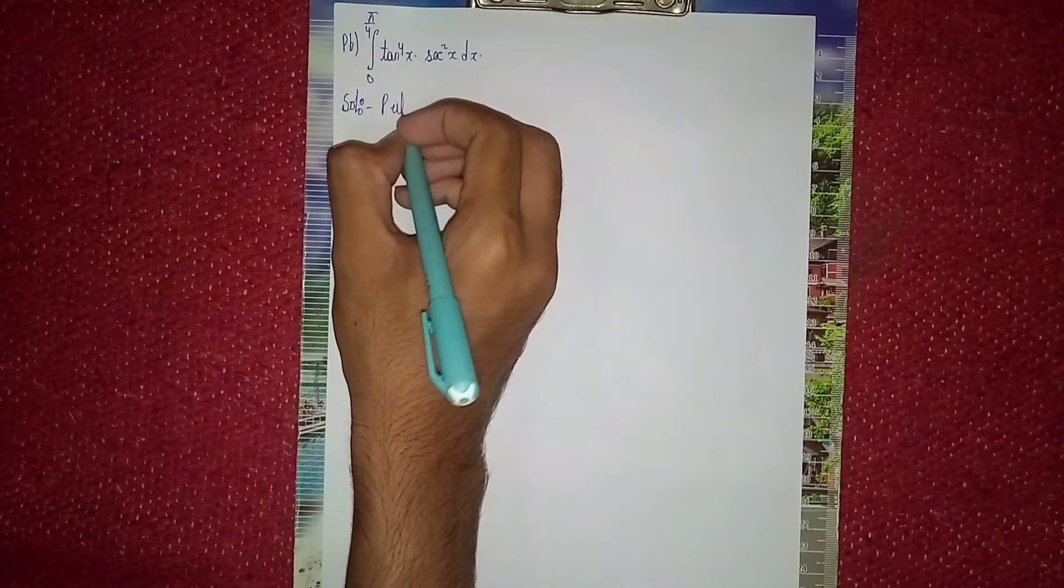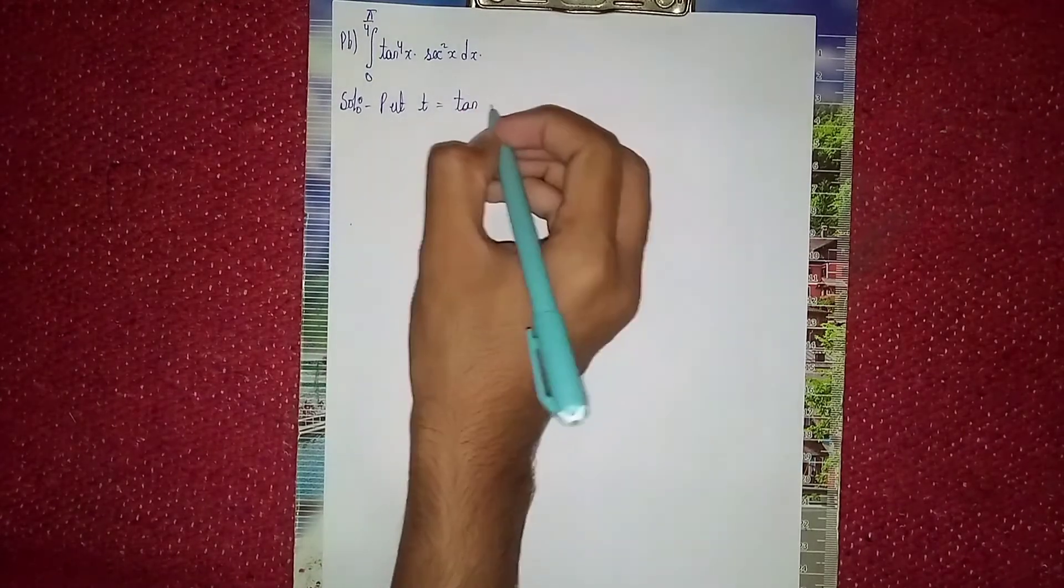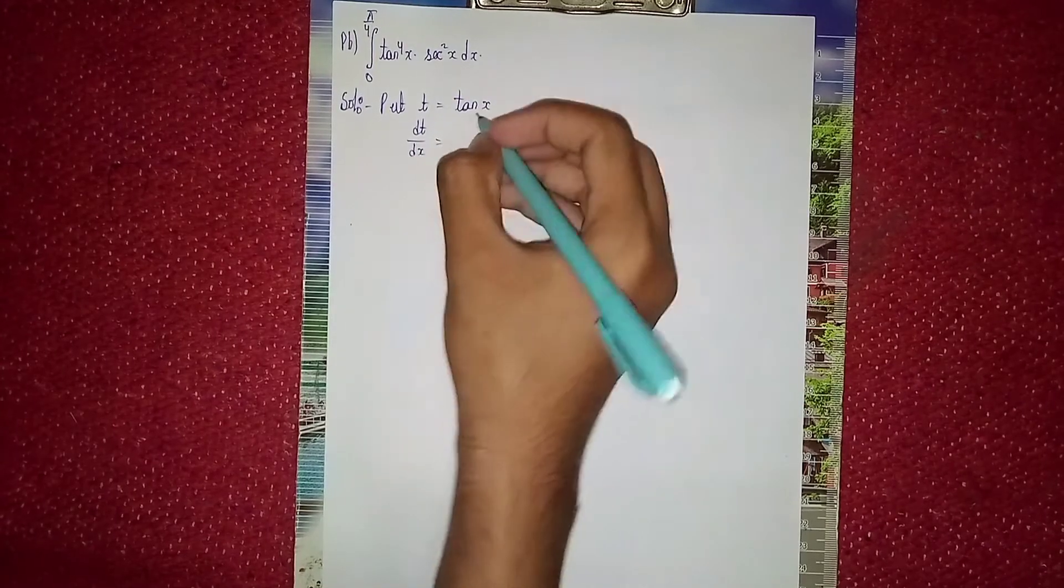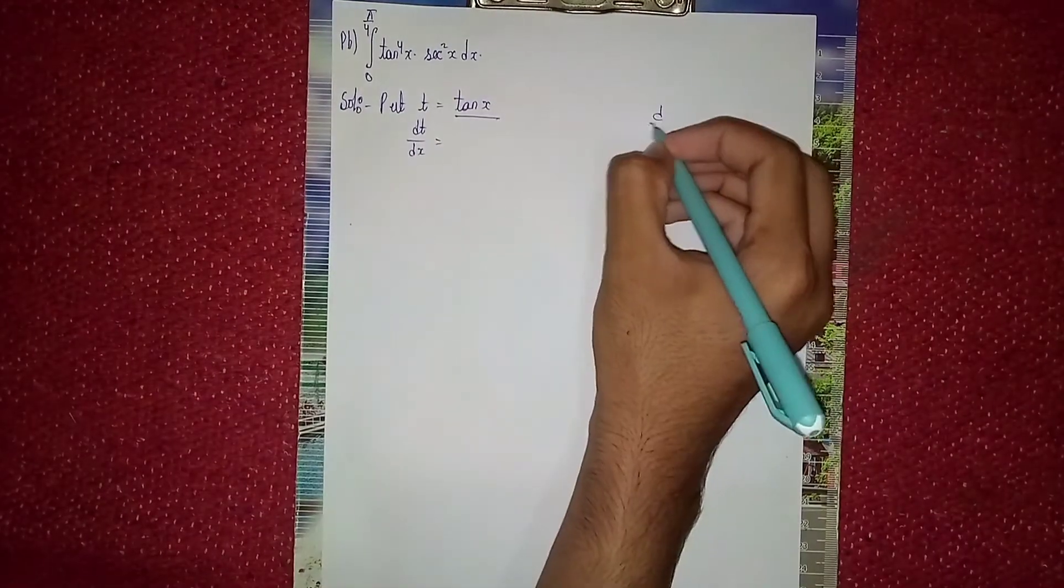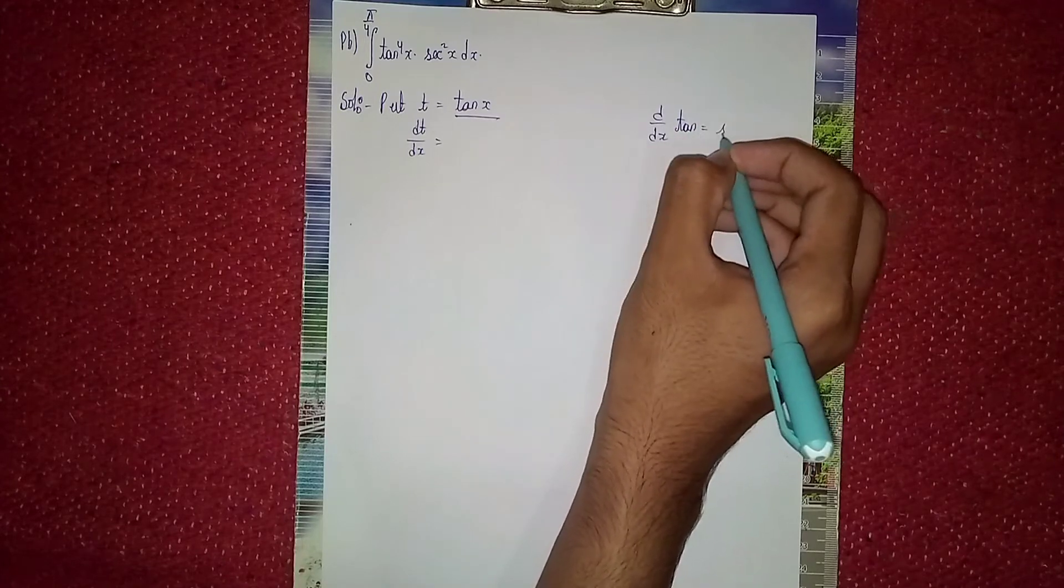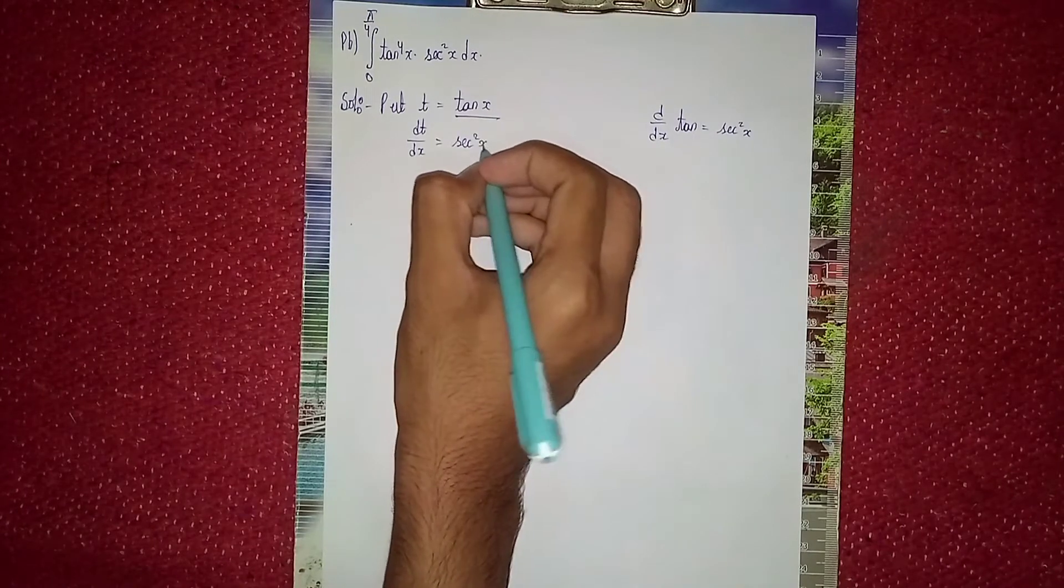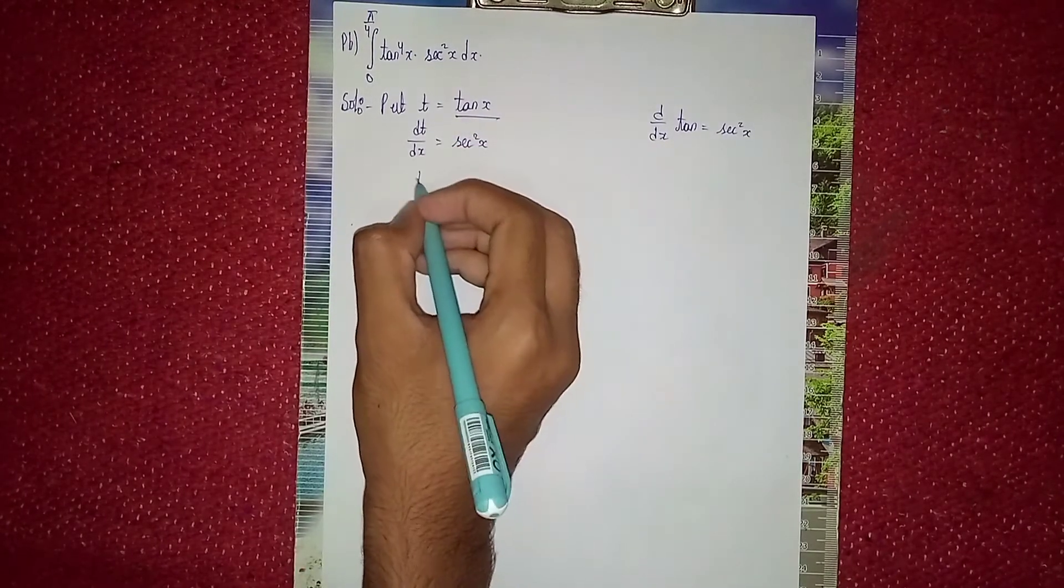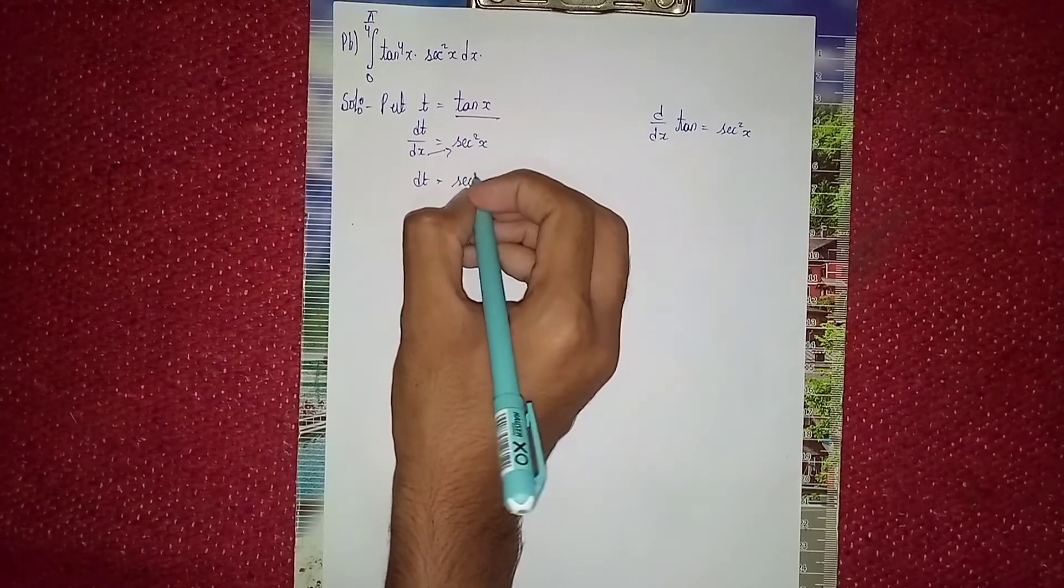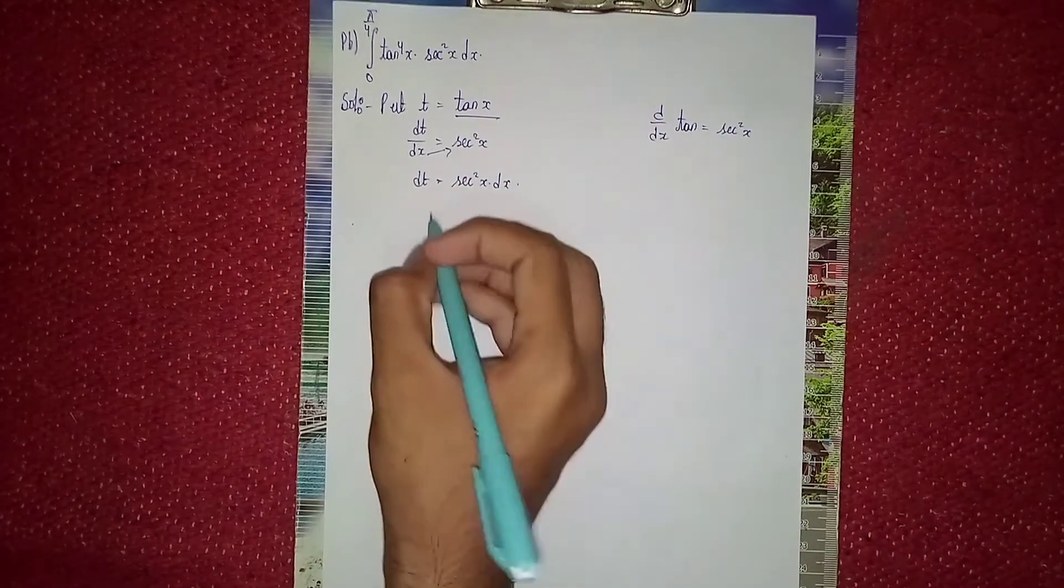Let's put t equal to tan(x). Now differentiate: dt/dx equals d/dx of tan(x), which equals sec^2(x). So it becomes sec^2(x), and we want dt equals sec^2(x) dx.